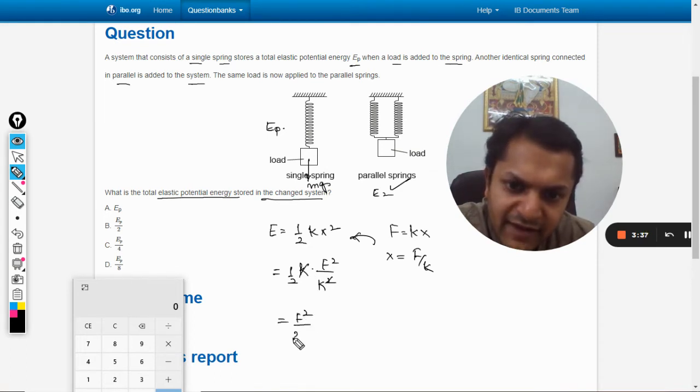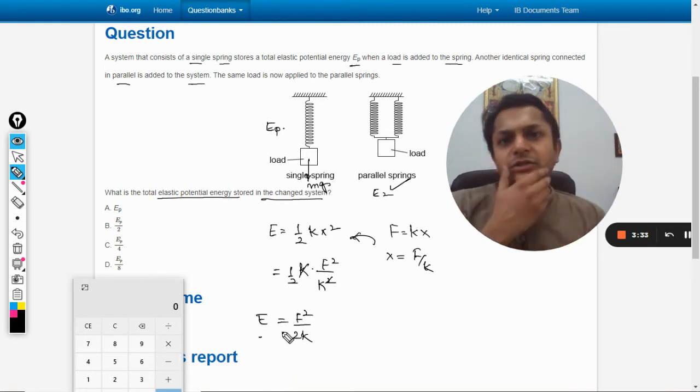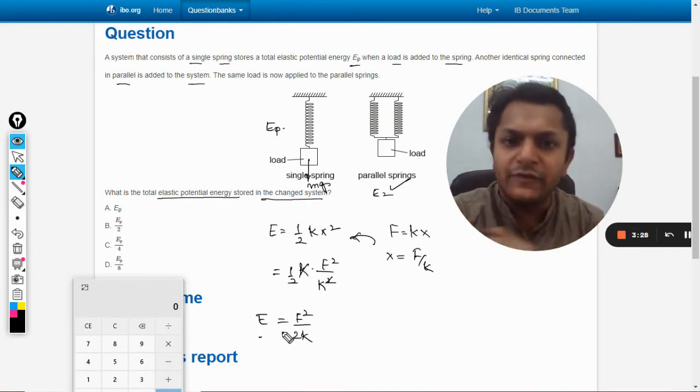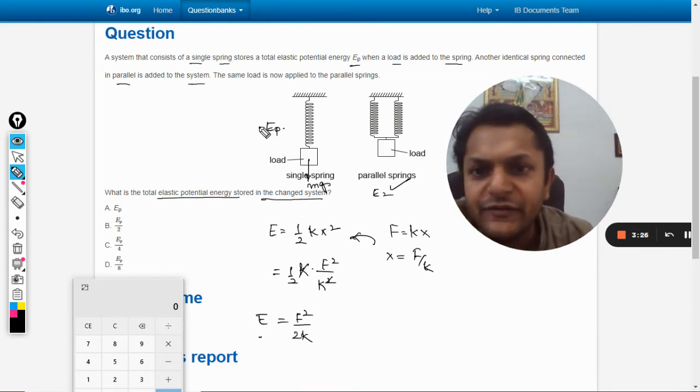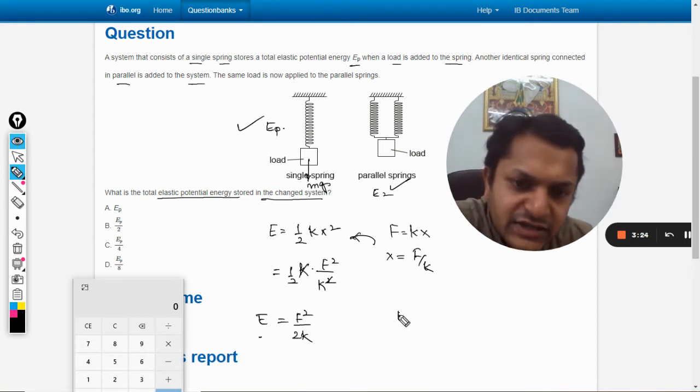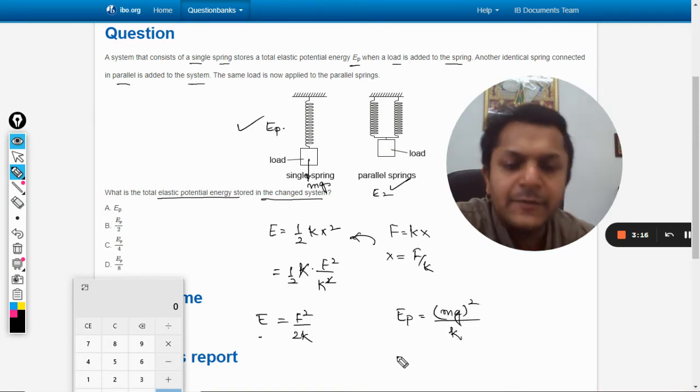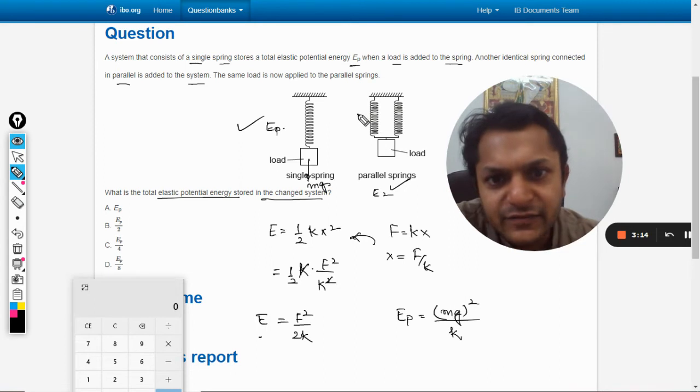Which is like F squared by 2k. So this is another general formula that can be used anywhere. It's a general formula for the spring system. So in our first case, when the energy is E_p, I will say that the force is mg, so mg squared divided by k.